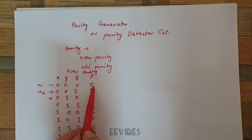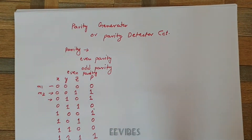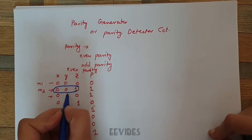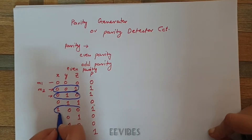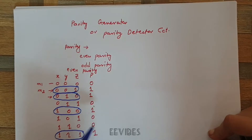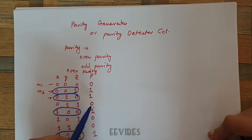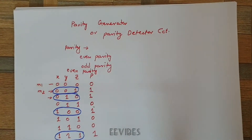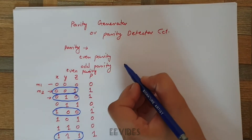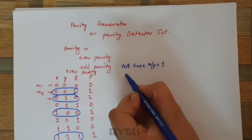Looking at the parity function, you can clearly see the function value — or parity value — is equal to one when there are an odd number of ones in the original message. Similarly, the function value is equal to zero when there are an even number of ones in the transmitting message. According to the XOR gate property, XOR is the only function which produces output equal to one when there are an odd number of ones.